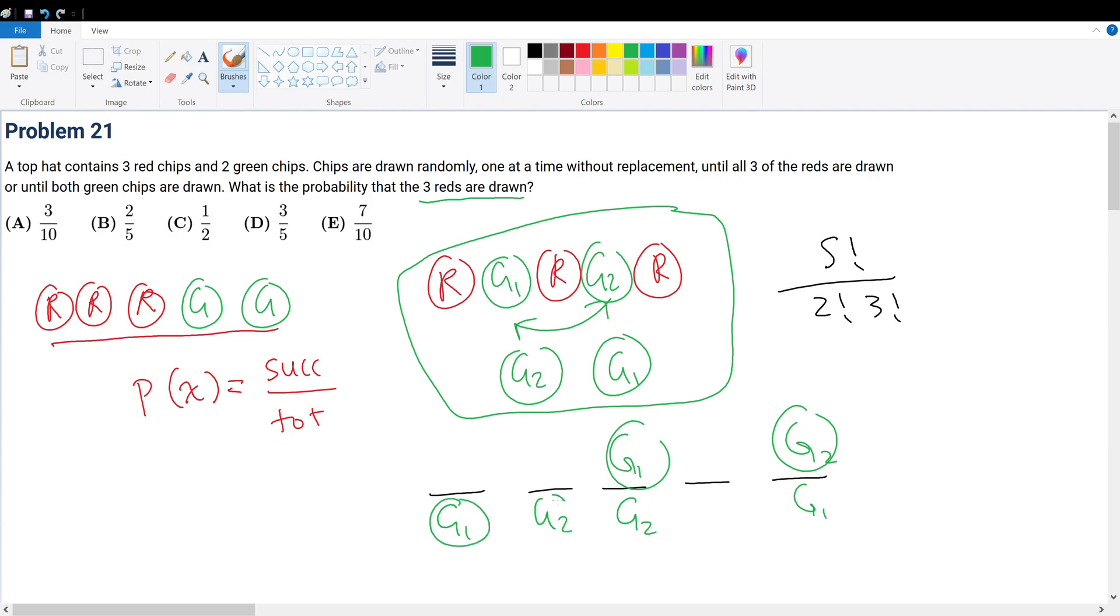Well, how many ways are there to put these two distinct green chips on these two slots? Well, the number of ways is obviously G1, G2, and then swapping it G2, G1. So for every single possible two spots that the two green chips can occupy, there's always going to be two ways to rearrange them after placing it. So that's why we divide it by 2 factorial, and by the same logic we do it for the red.